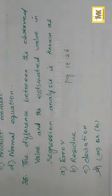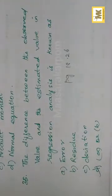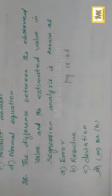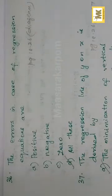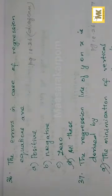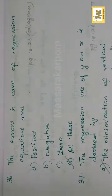The difference between the observed value and the estimated value in regression analysis is known as error or residual. So it is either error or residue — A or B. Error can be positive, negative, or zero.